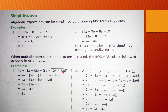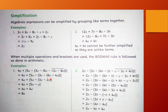Sabse pehle bar bracket ke neeche dekho: 12A aur minus 8A like terms hain. 12A mein se 8A subtract karein to 4A aata hai. Bar bracket khatam hogi. Baaki brackets as-is rahenge. Next step: small bracket mein 6A minus 4A = 2A.